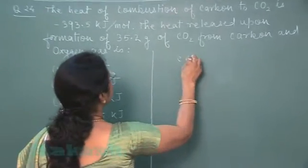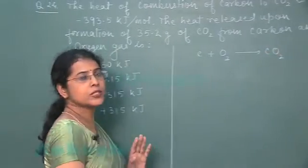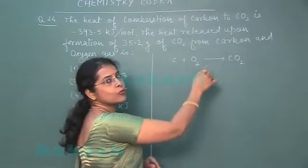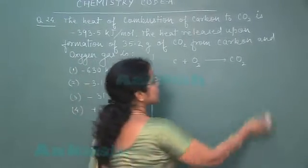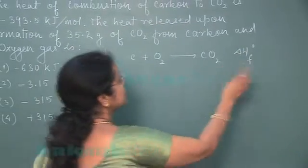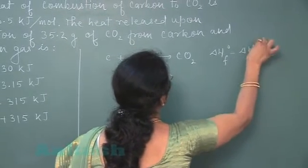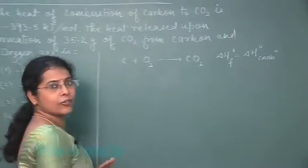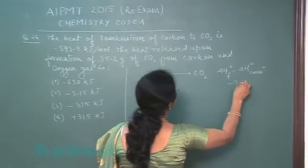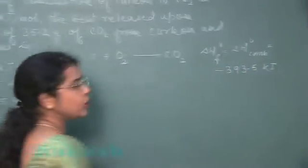Let us write the equation: C + O₂ → CO₂. This is combustion of one mole of carbon, or equivalently the formation of one mole of carbon dioxide. So the enthalpy of formation in this reaction equals the enthalpy of combustion, and the value given for this enthalpy change is minus 393.5 kilojoule per mole.